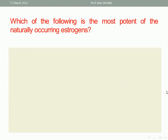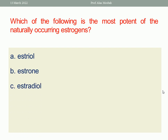Which of the following is the most potent of the naturally occurring estrogens? Estriol, estrone, estradiol, ethinyl estradiol. Note that ethinyl estradiol is a synthetic estrogen, so exclude it. Considering the three natural estrogens — estriol, estrone, and estradiol — the most potent and predominant one is estradiol. So the right answer is estradiol.